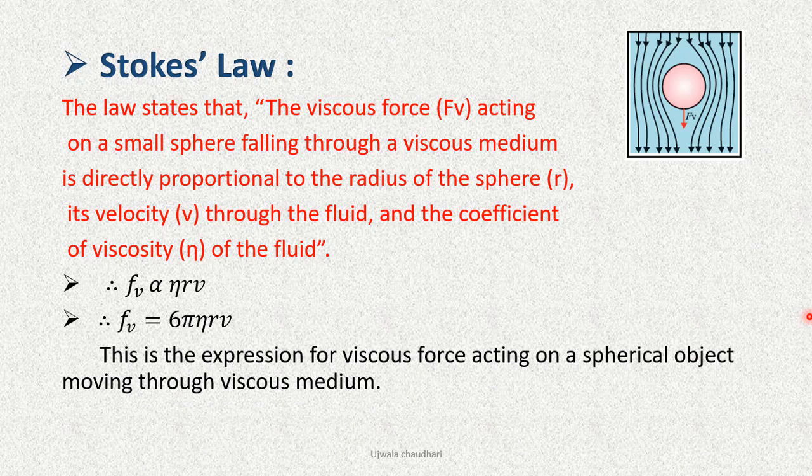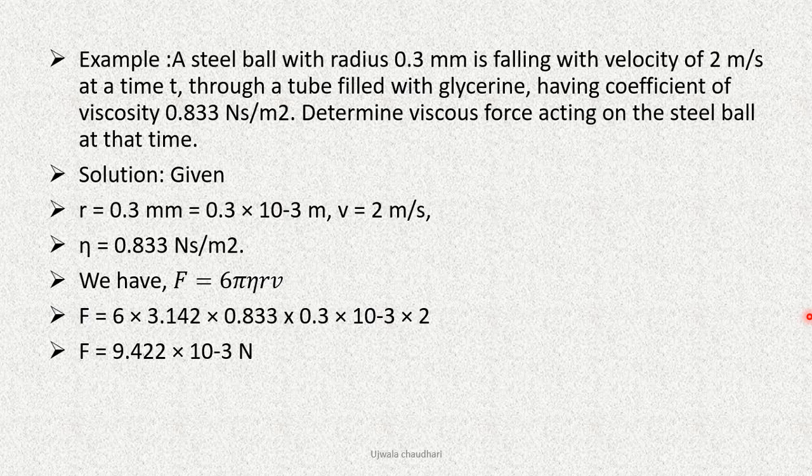Example: A steel ball with radius 0.3 mm is falling with velocity of 2 m/s at a time t through a tube filled with glycerine, having coefficient of viscosity 0.833 Ns/m². Determine viscous force acting on the steel ball at that time.